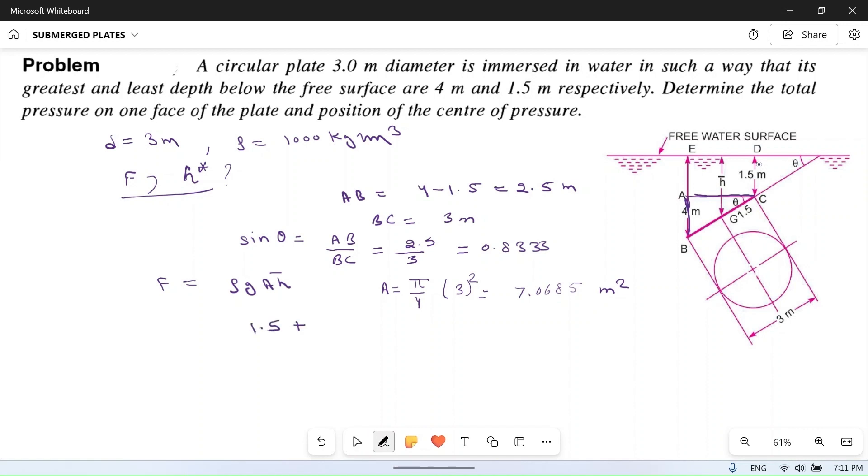Plus this, 1.5 meters plus half of this 2.5 by 2. So 1.5 plus 4 meters minus 1.5 divided by 2.